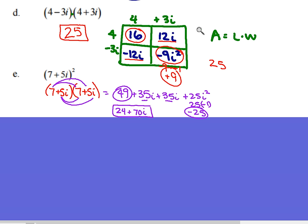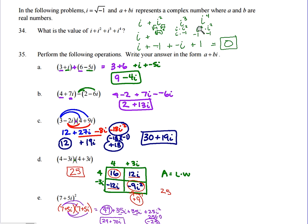Let's zoom out and check the answer key. For problem 35: we got 9 minus 4i — correct. 2 plus 13i — correct. 30 plus 19i — correct. And 25. And 24 plus 70i — correct. We did them all right.